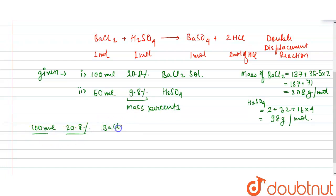Number of moles of BaCl2 would be equals to 20.8 gram divided by its molecular weight, which we found out to be 208 grams per mol. Hence, number of moles would be equals to 0.1 mol.